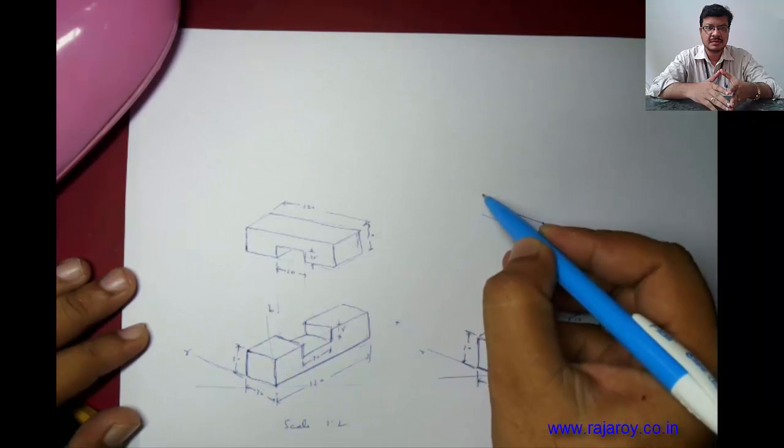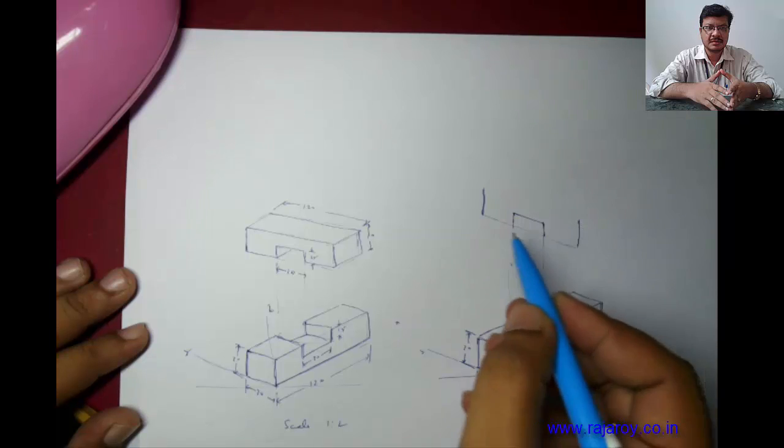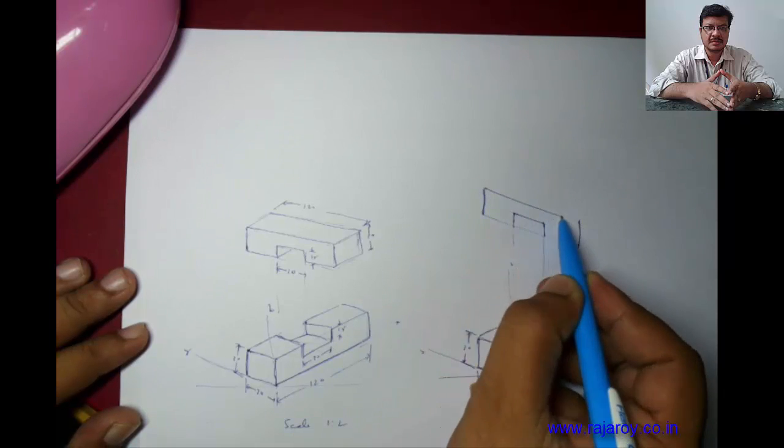Now this particular line is parallel to x-axis. Parallel to x, length 30. This is parallel to z. Take 30 along z-axis. If you join these two points, that will be automatically parallel to y-axis.